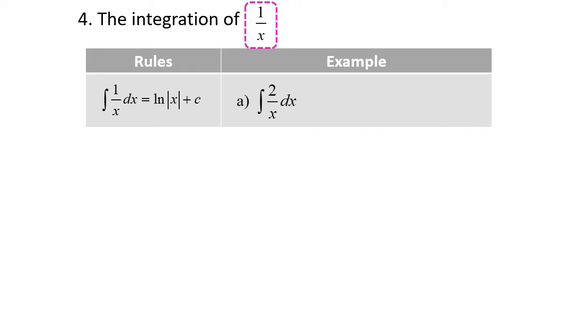So this is a simple example. Part A: integrate 2 over x dx, then integrate 1 over 3x dx.